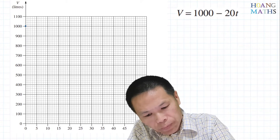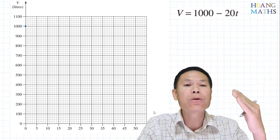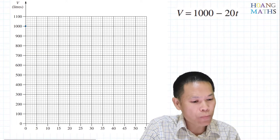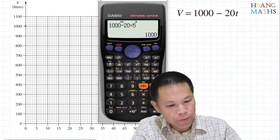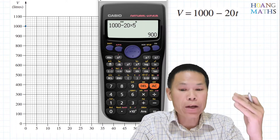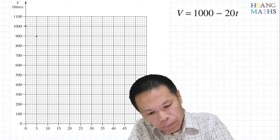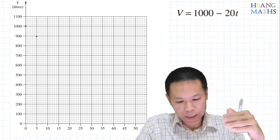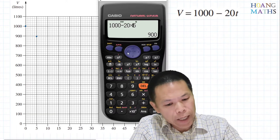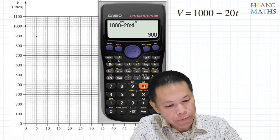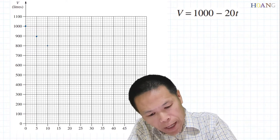Next, when t = 5: 1000 − 20 × 5 = 900. So when t = 5, V = 900. And when t = 10: 1000 − 20 × 10 = 800. You can see the pattern.